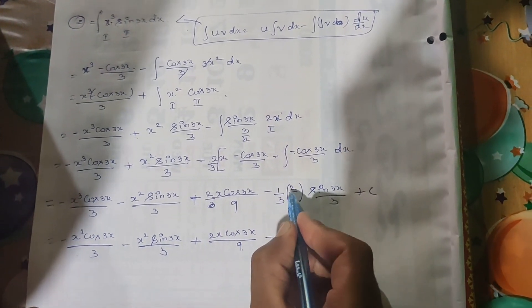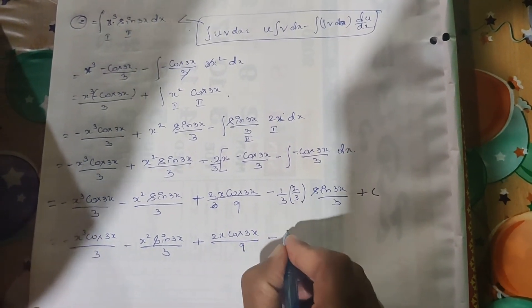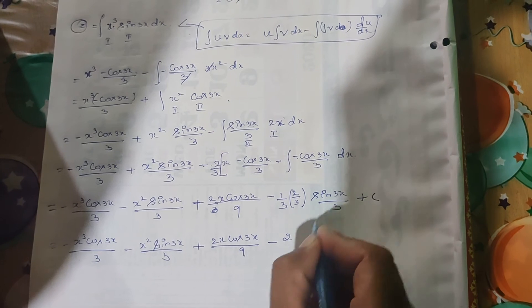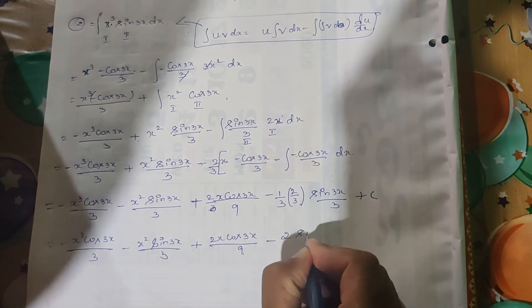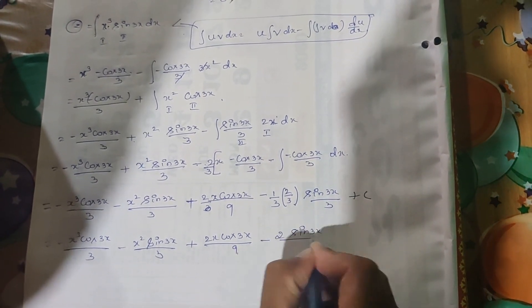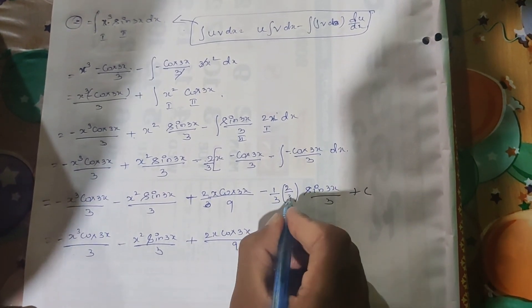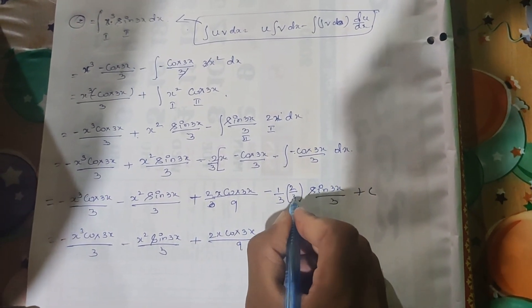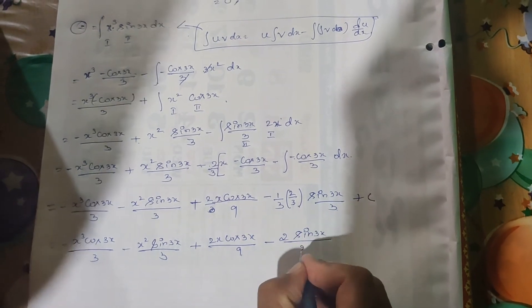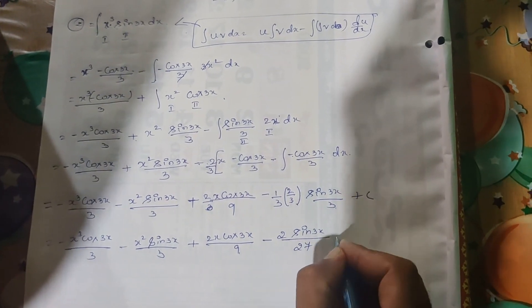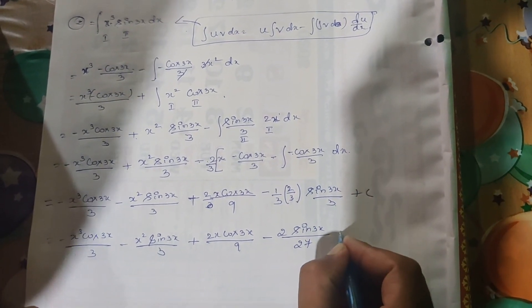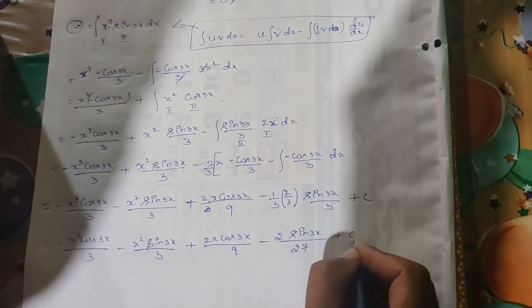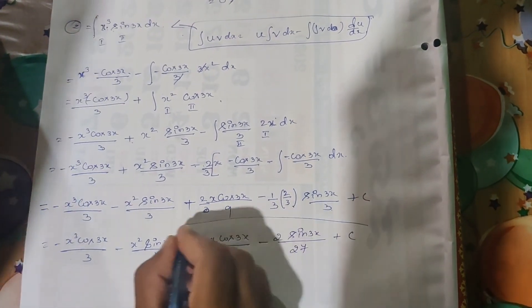Minus of 2 into 1 gives 2; multiplying sin(3x) divided by 3 into 3 gives 9, and 9 into 3 gives 27. So the final term is minus 2 sin(3x) divided by 27, plus C. That's the answer.